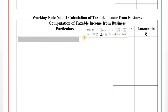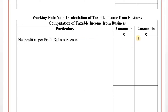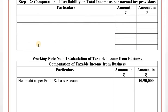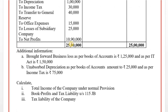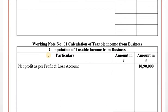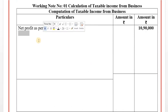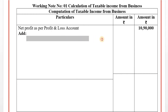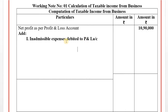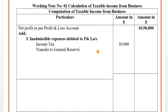Working Note Number 1: Calculation of taxable income from business. Net profit as per profit and loss account: Rs. 10,90,000. Add inadmissible or disallowed expenses and losses already debited to profit and loss account. Income tax - disallowed. Transfer to general reserve - disallowed. Losses of subsidiary company - disallowed.